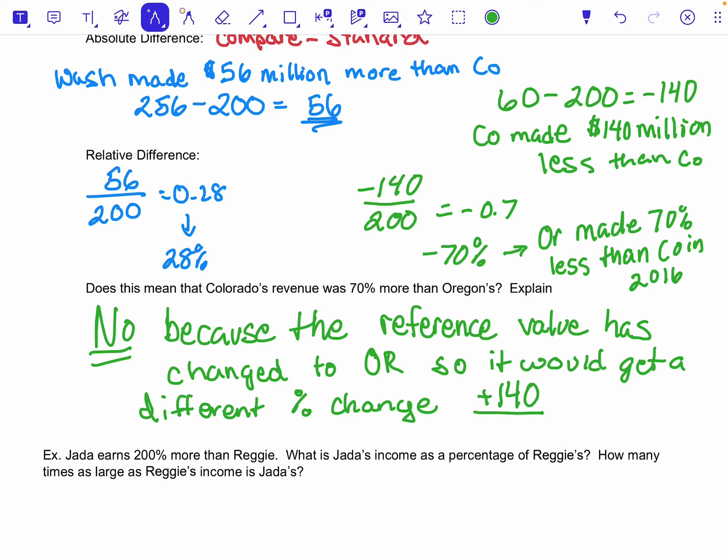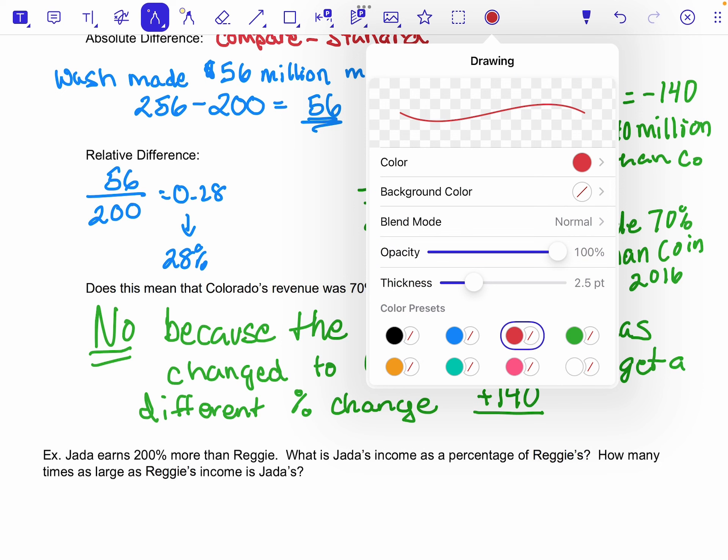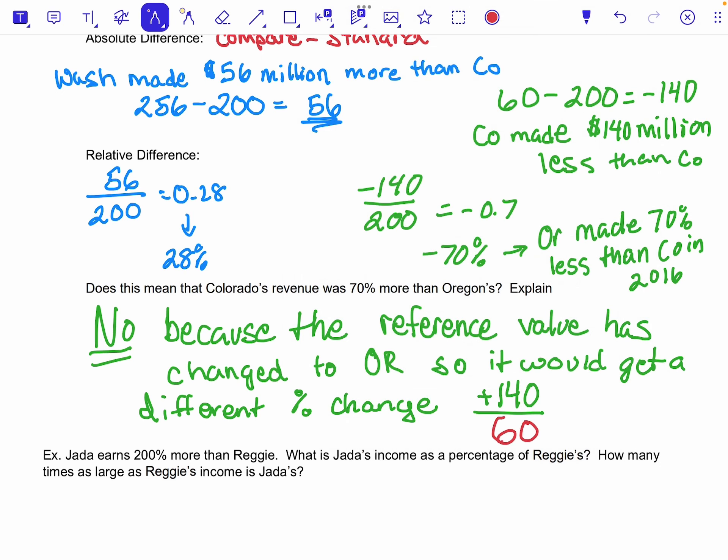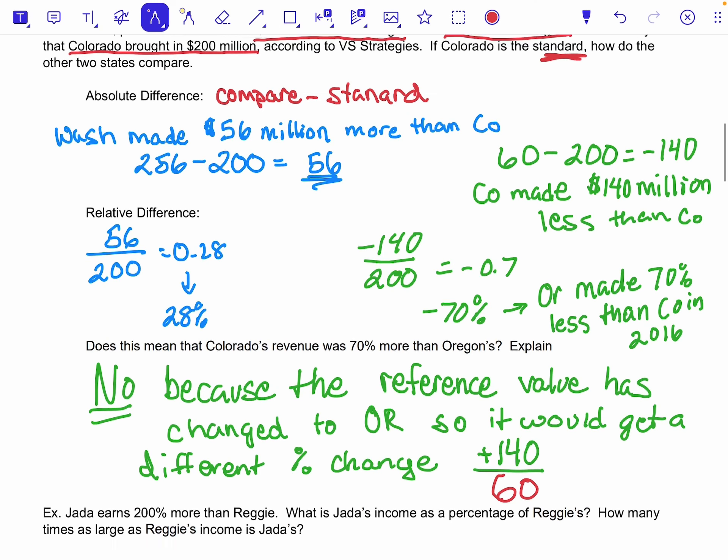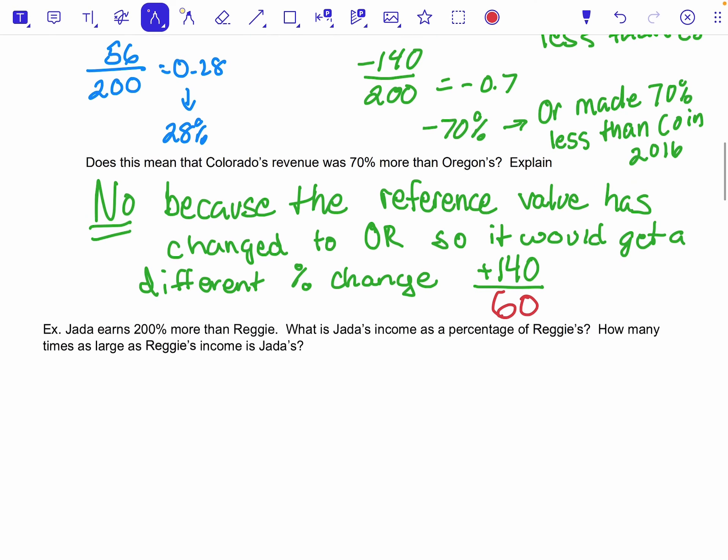But instead of dividing by 200, the key difference here is we would have been dividing by the 60, because $60 million is now my reference point, which would get me 233.3%, a totally different number than that 70% we found on the previous problem.